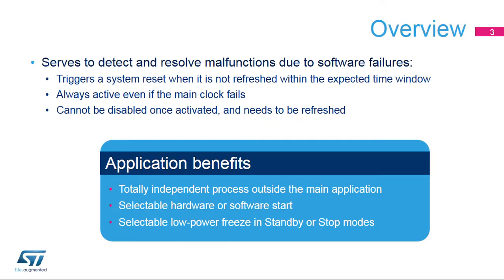The Independent Watchdog is used to detect and resolve malfunctions due to software failures. It triggers a reset sequence when it is not refreshed within the expected time window. Since its clock is an independent 32 kHz Low-Speed Internal RC Oscillator, or LSI, it remains active even if the main clock fails. Once enabled, it forces the activation of the Low-Speed Internal Oscillator, and it can only be disabled by a reset.